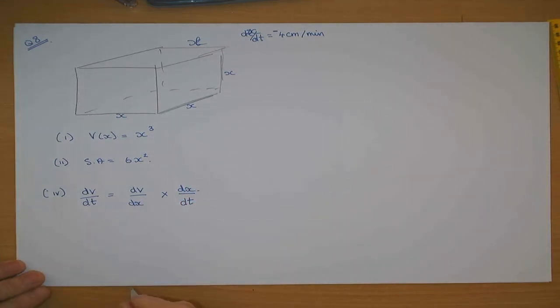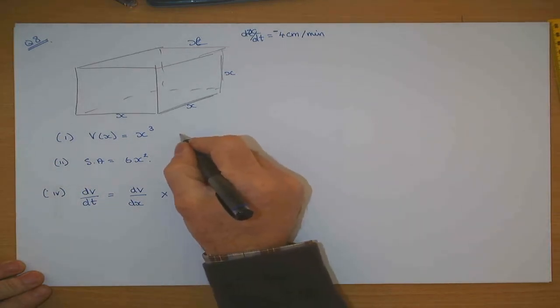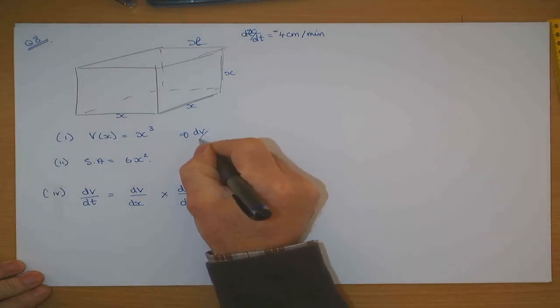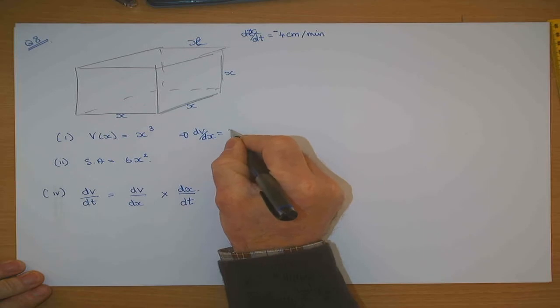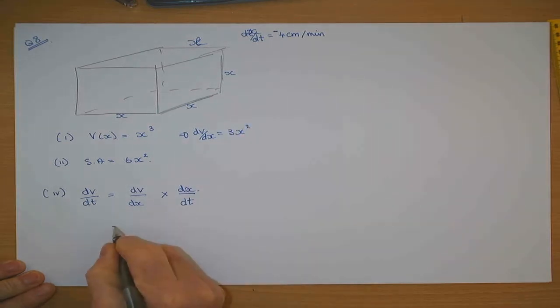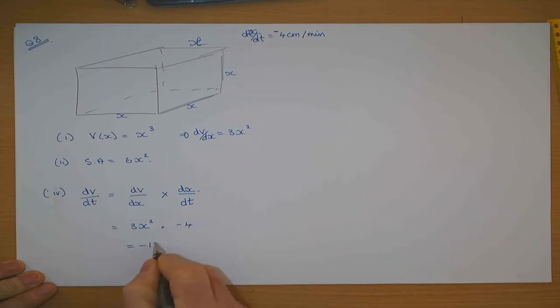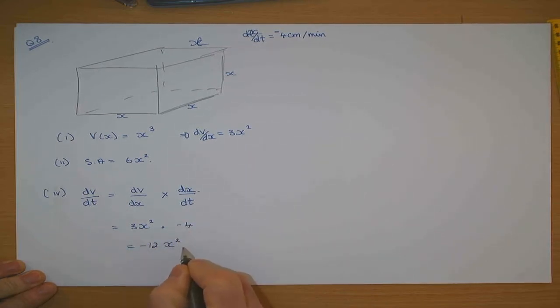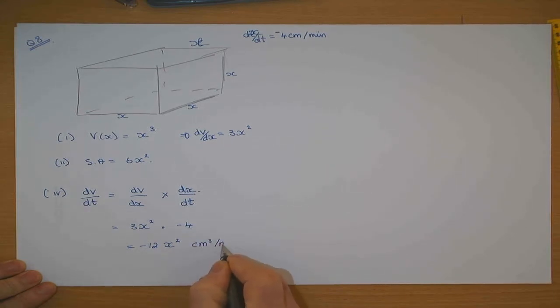So dV/dx times dx/dt. If V = x³, what does that mean? dV/dx = 3x². So that's 3x² times -4, which is -12x² dV/dt centimeters cubed per minute.